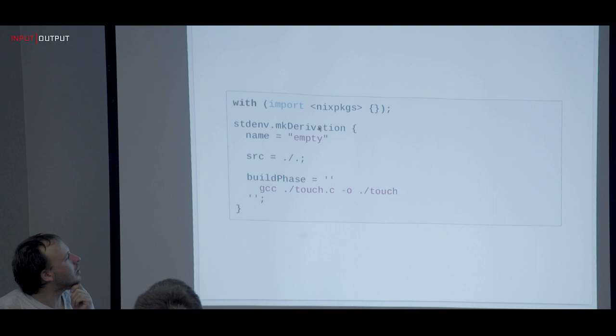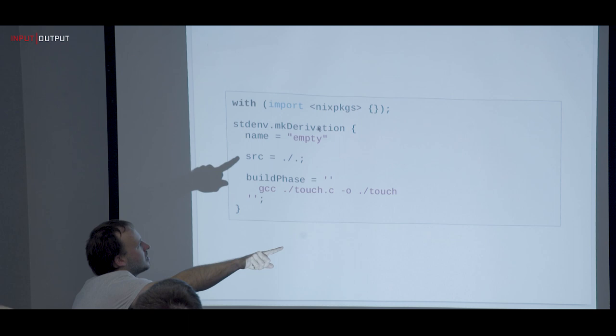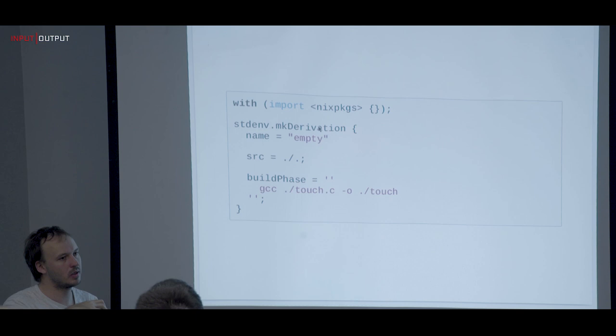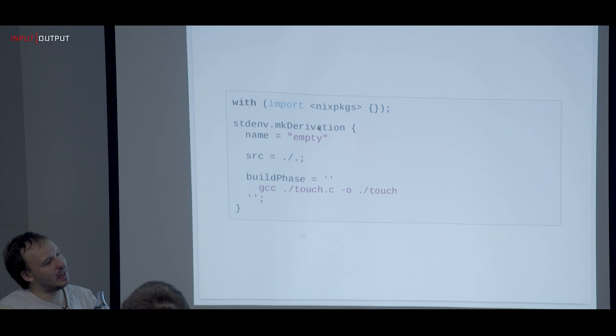Every time you change the source file, the hash changes because the content of the source changes. So it's a content-addressed system. And for local development, if you have things like an editor config, you have to filter that out, otherwise it becomes part of the hash.